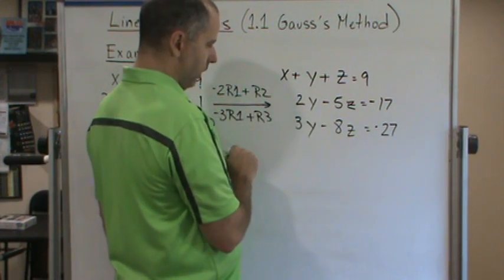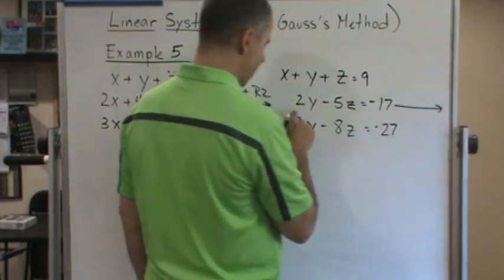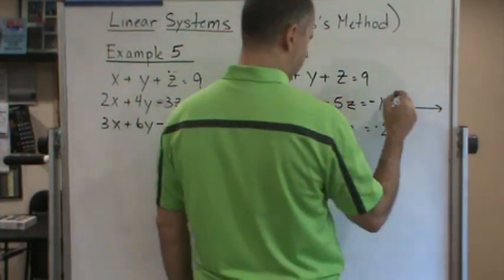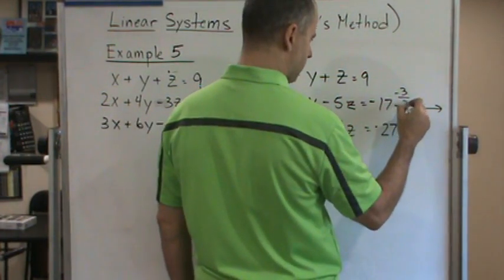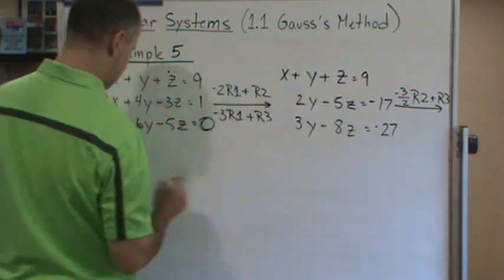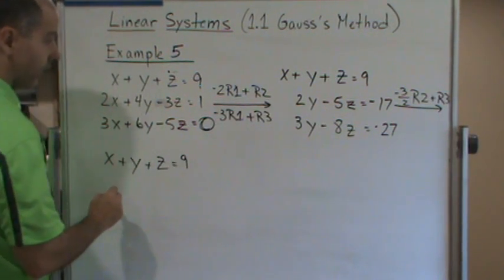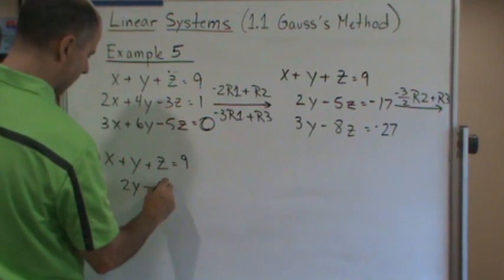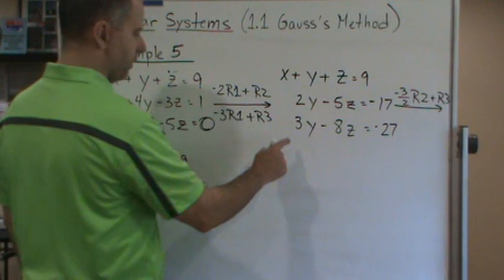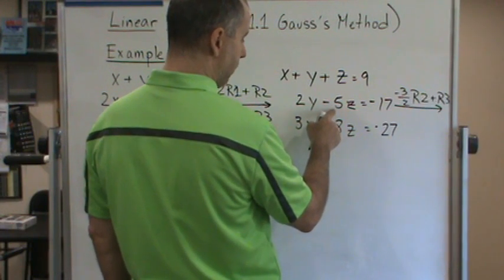We'll multiply the second equation by negative three halves, since negative three halves times 2y gives negative 3y, which cancels the 3y in row three. So the ERO is: negative three halves times row two plus row three. We copy the first two rows unchanged: x plus y plus z equals 9, and 2y minus 5z equals negative 17. The y term in row three goes away.